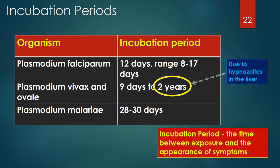The incubation period is the time between exposure to an infection and the appearance of the first symptoms. This table lists the incubation periods for Plasmodium falciparum, vivax, ovale, and malariae. The incubation period for falciparum is generally 12 days with a range from 8 to 17 days. For vivax and ovale it's 9 days to 2 years due to the latency of hypnozoites in the liver. The incubation period for malariae is 28 to 30 days.